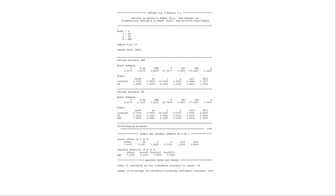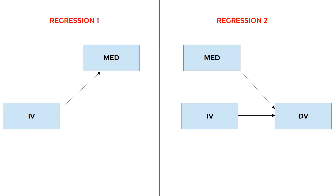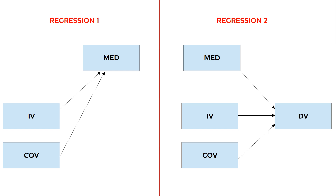My name is Arndt Rigozsch, I'm a statistical consultant, and in this video I show you how to check the different regression assumptions for Process Model 4. Process Model 4 is based on two regressions: one, the independent variable predicting the mediator, and two, the mediator and the independent variable predicting the dependent variable. If you have covariates, those are part of both regression models as well, and those two regressions only give correct results if the relevant assumptions are met.